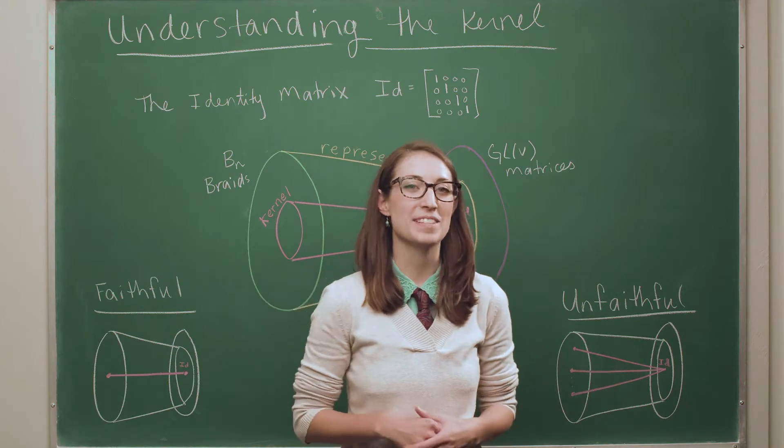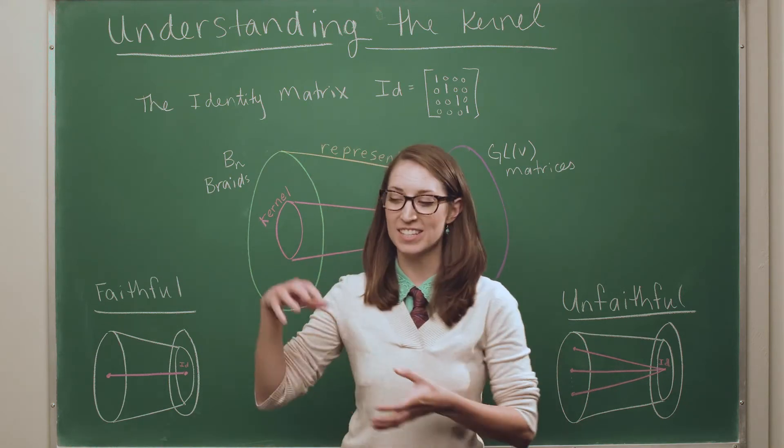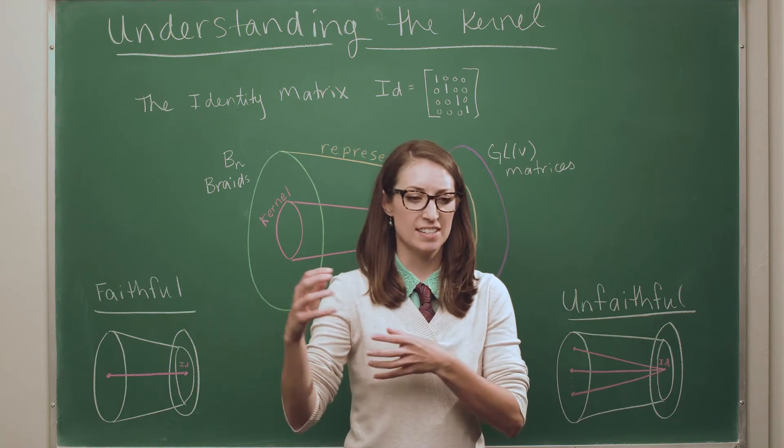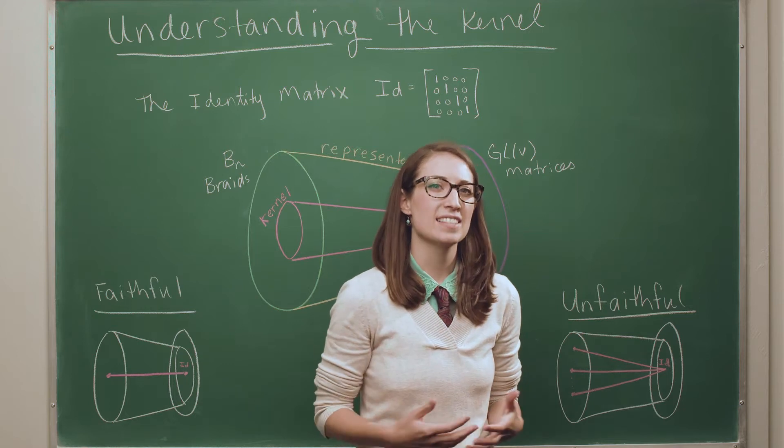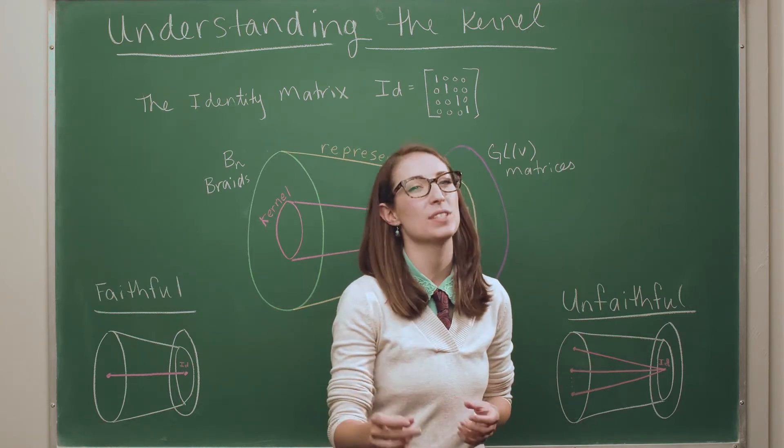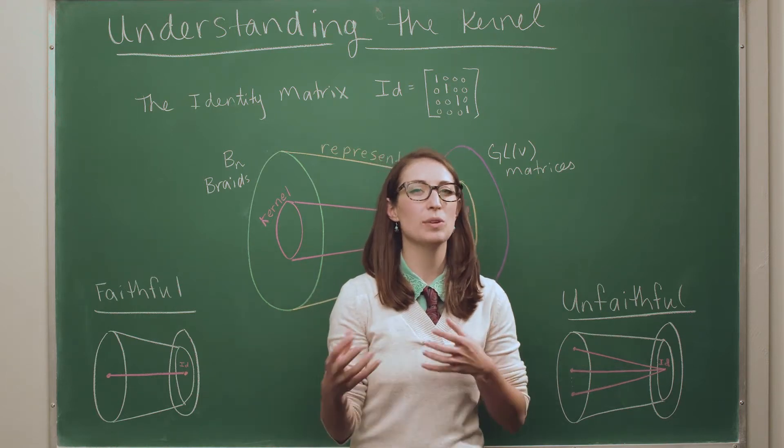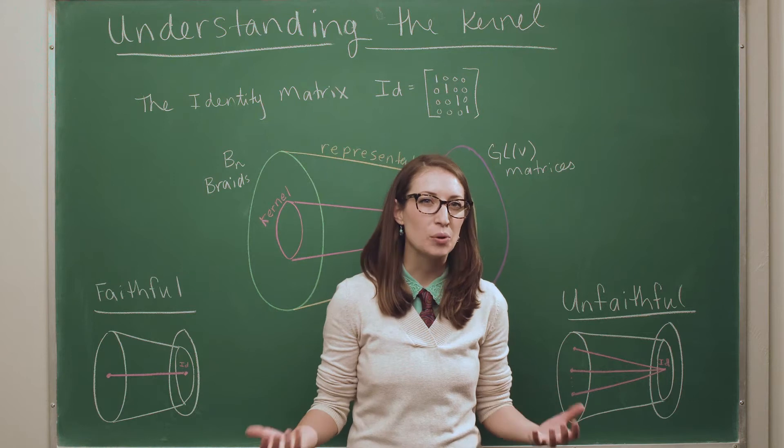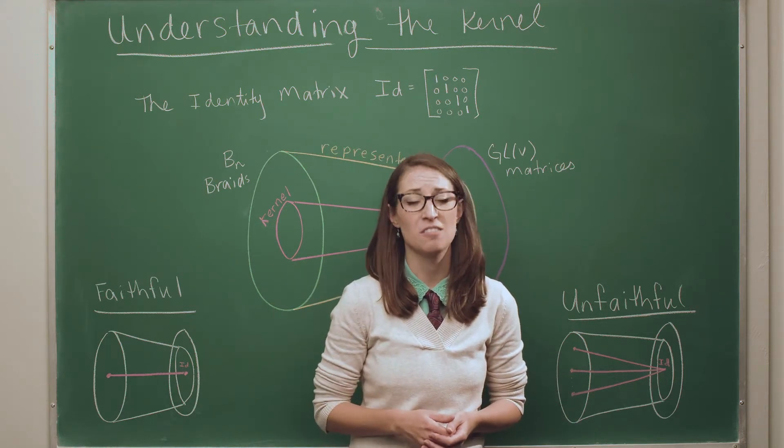We learned in the previous video what a representation is. It's a special kind of function that takes in braids and does something clever to them and spits out matrices. And so now we want to ask how good was that representation? How good was that translation process? And what sort of thing would we look at to measure how good that translation was? It turns out it all comes down to the kernel of the representation.